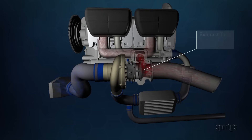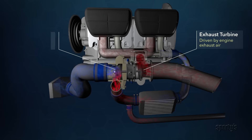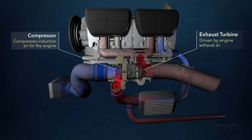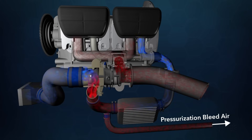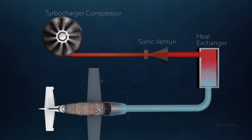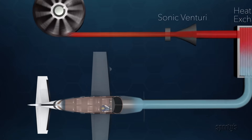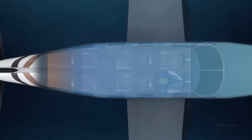A turbocharger consists of two parts: an exhaust-driven turbine and a compressor, which is connected to the turbine by a shaft. While the exhaust is only used to spin the turbine, the compressed air from the other side goes to the intake system of the airplane to maintain manifold pressure and also to the pressurization system. After it leaves the compressor, it goes through a sonic venturi to slow the velocity of the air. From there, it goes to a heat exchanger or intercooler, where the heat created by compression is dissipated. Even with this process, the compressed air is warmer than ambient when it goes into the cabin, which has been sealed as tightly as possible.